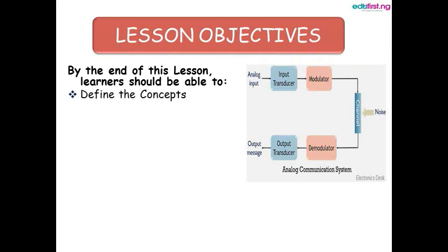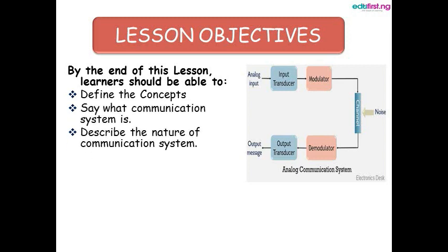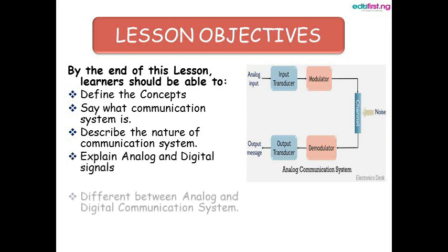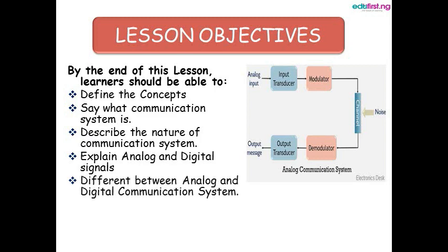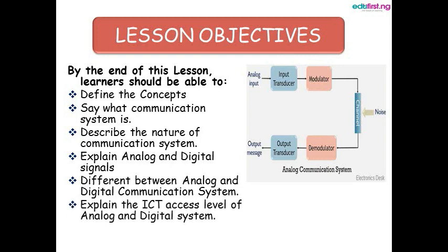Lesson objectives: by the end of this lesson, learners should be able to define the concepts of the topic, say what a communication system is, describe the nature of a communication system, explain analog and digital signals, differentiate between analog and digital communication systems, and explain the ICT access level of analog and digital systems.